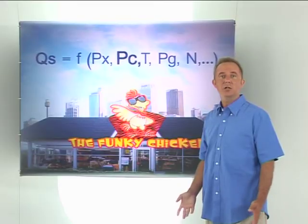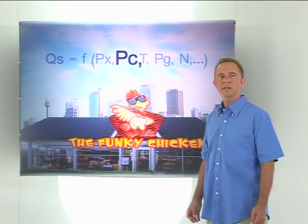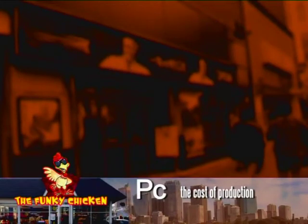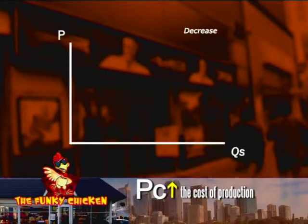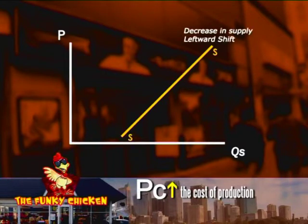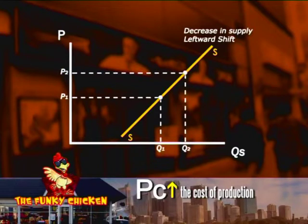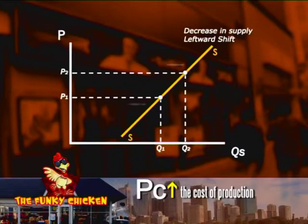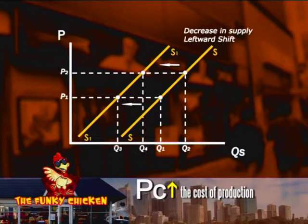To start with, let's consider the effects of a change in the cost of production, PC. From our previous conversations about what determines the supply of fried chicken pieces, we saw that if the cost of production increases, the funky chicken will tend to supply a lower quantity at the same price. Looking at our supply curve, at each price a lower quantity would be supplied than before, and a new supply curve to the left of the original one is formed.